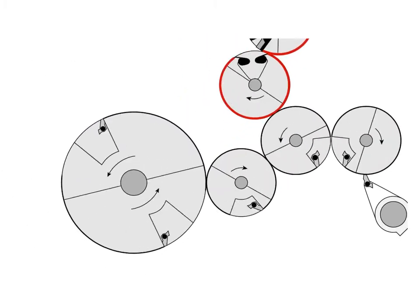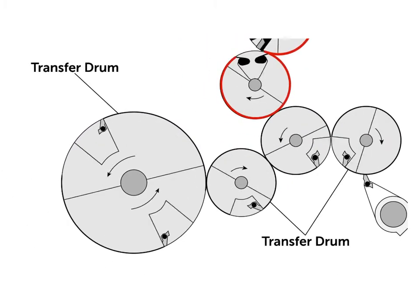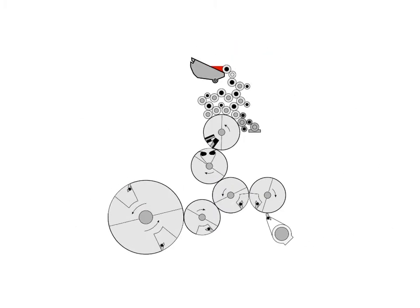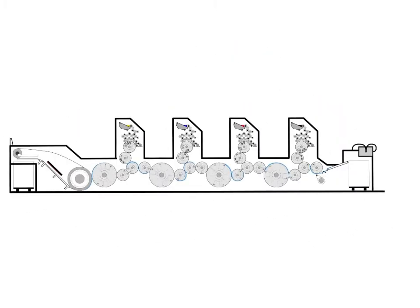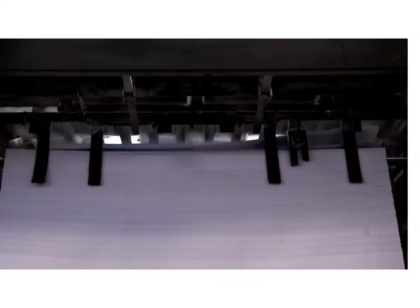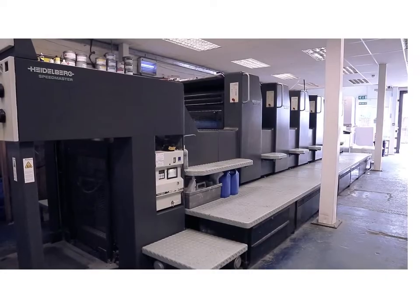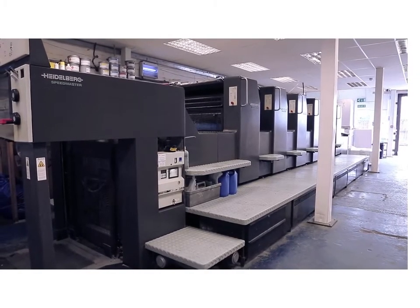The paper runs between the impression cylinder and the blanket cylinder, pressing the image onto the paper. The paper then runs through the transfer drums — each cylinder is equipped with grippers that pick up the paper from the previous cylinder and transfer it to the next. Once the prints have passed through each unit, they are dried with hot and cool air and placed on the delivery pile. That is the process of offset lithographic printing.